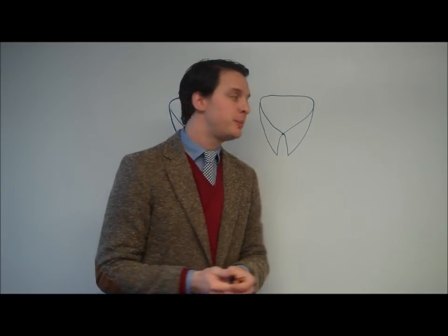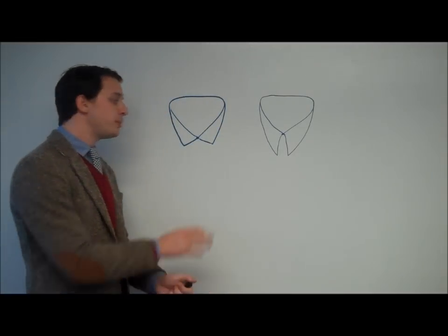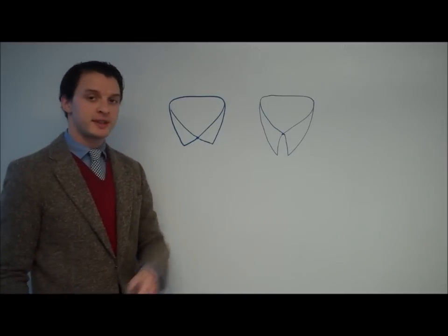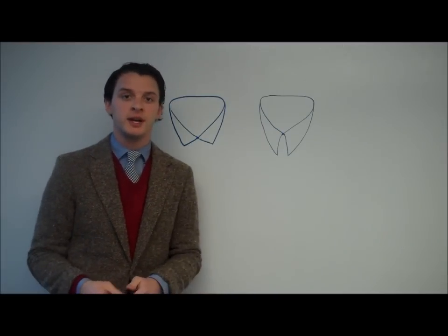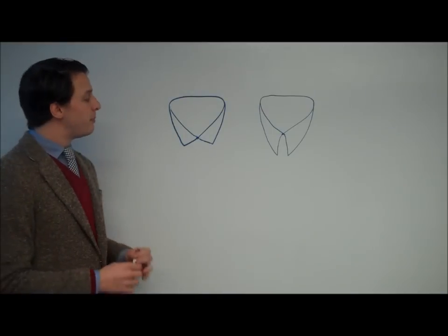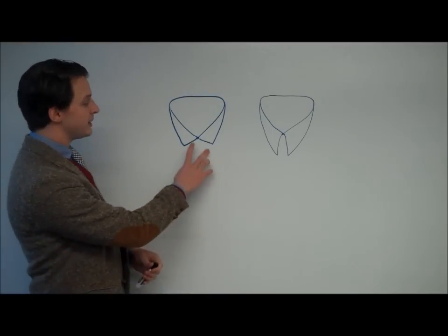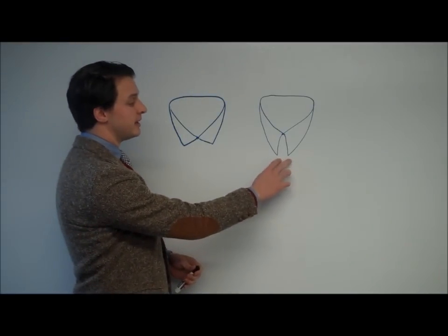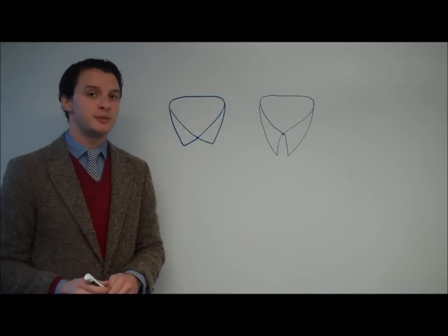So what does this mean? Well, I've drawn two pictures here to help us. This would be the spread collar and this the forward point or standard collar. Now what you want to do is pick a tie knot that comes close, if not exactly meeting, those two points.